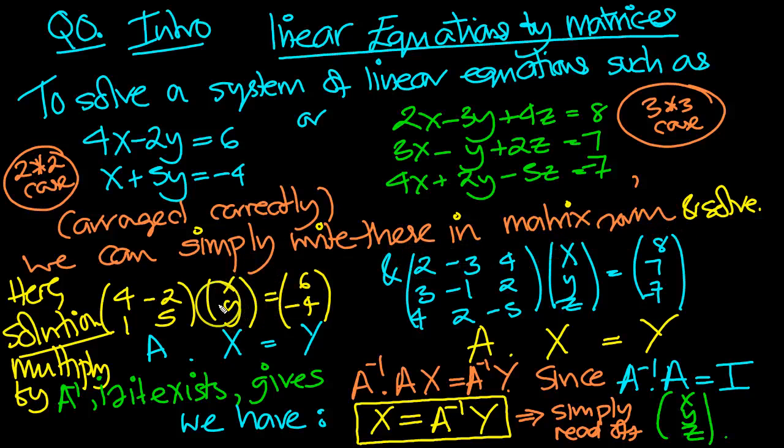And then we can get the solution. So, for example, we look at the coefficients here, 4 minus 2, 1, and 5. So we arrange them in that order, in that arrangement in the 2 by 2 matrix, times by xy equals 6 minus 4 on the right-hand side.